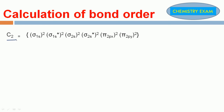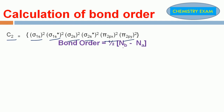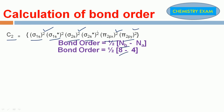Next, C₂. What is the electronic configuration for C₂? Sigma 1s², sigma star 1s², sigma 2s², sigma star 2s², pi 2px², pi 2py². How many bonding electrons? 8. How many anti-bonding electrons? 4. So 1/2 into (8 minus 4) equals 1/2 into 4 equals 2. The bond order for C₂ molecule is 2.